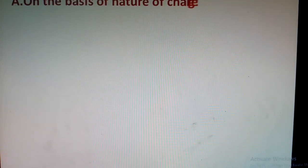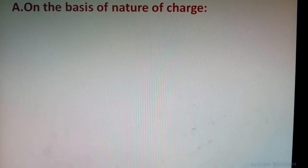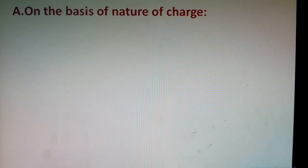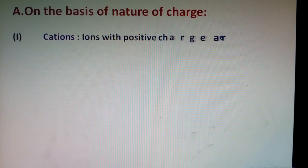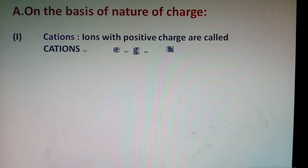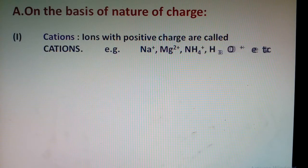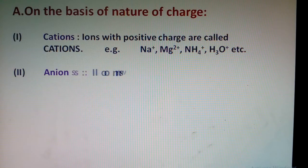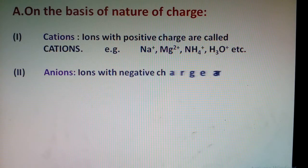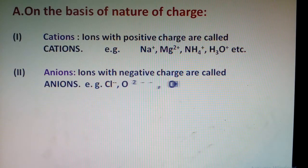First, let's look at types of ions on the basis of nature of electric charge. There are two types: cations, which are ions that carry positive charge—examples include metal ions like sodium, magnesium, ammonium. Second type: anions, which are ions that carry negative charge. Examples include non-metal ions like chloride, oxide, hydroxide, carbonate, sulfate, etc.